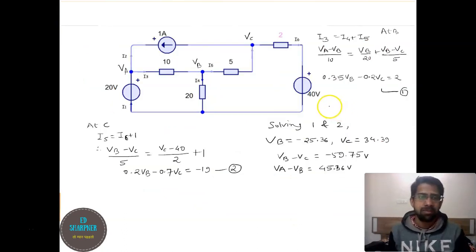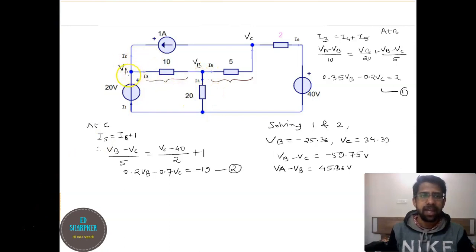Let us solve a problem to make you understand better. Here we have to find out the voltage across 5 ohm resistance and voltage across 10 ohm resistance. Now we have this circuit and we have to identify the number of nodes first. We have identified three nodes: VA, VB, and VC. As we are connecting the bottom terminal to the ground, ultimately VA becomes 20V. So we will be applying the nodal analysis at VB and VC.